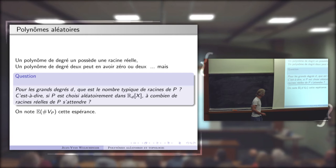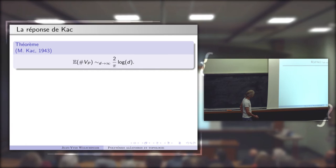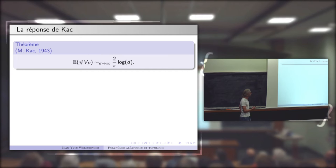Une première réponse à cette question a été donnée dans les années 40 par Mark Kac. La réponse est asymptotique, c'est vraiment pour les très grands degrés. Le nombre de racines réelles attendu est (2/π) log(d), soit nettement moins que le nombre de racines complexes.